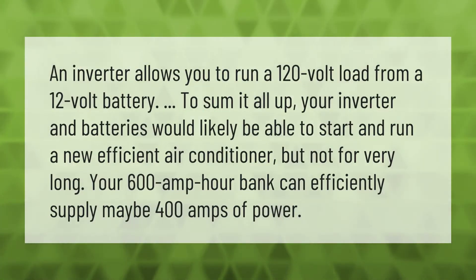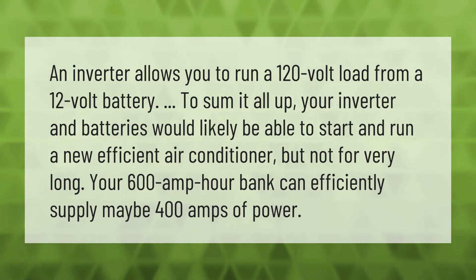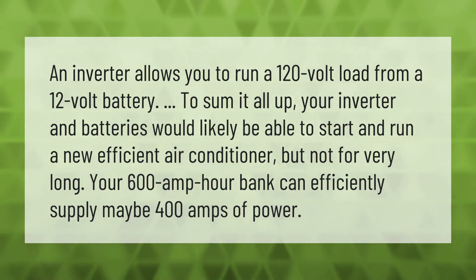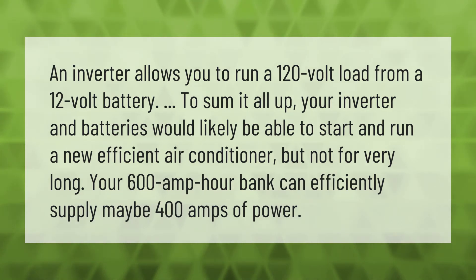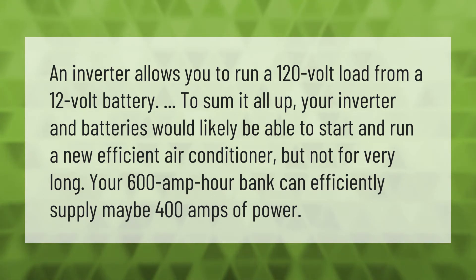An inverter allows you to run a 120-volt load from a 12-volt battery. To sum it all up, your inverter and batteries would likely be able to start and run a new efficient air conditioner, but not for very long. Your 600 amp-hour bank can efficiently supply maybe 400 amps of power.